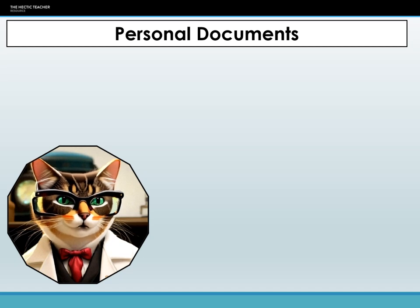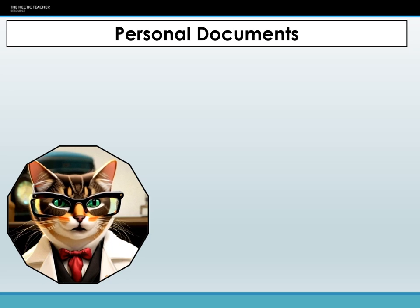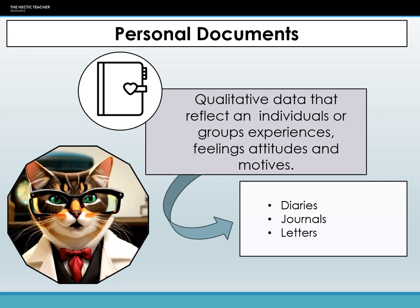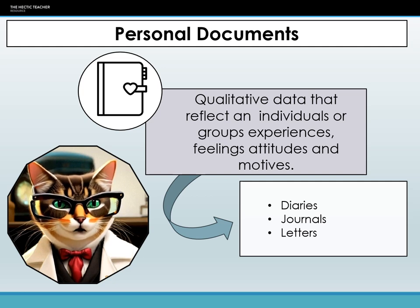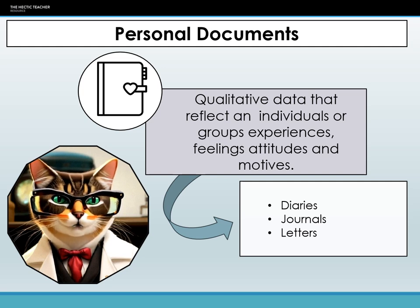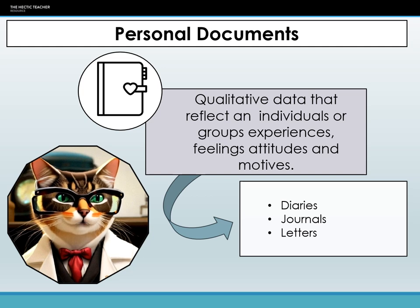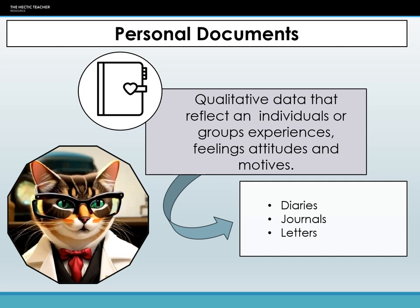Documents are another type of secondary data that comes in the form of qualitative data. There are a number of different types of documents. The first is personal documents. Personal documents refer to written accounts created by individuals, offering detailed insights into their personal experiences, thoughts, feelings, and social contexts. They are frequently utilized in qualitative sociological research to provide a first-hand perspective on various social phenomena. These documents can help illuminate both the intricacies of individual lives and the broader social structures they are a part of.